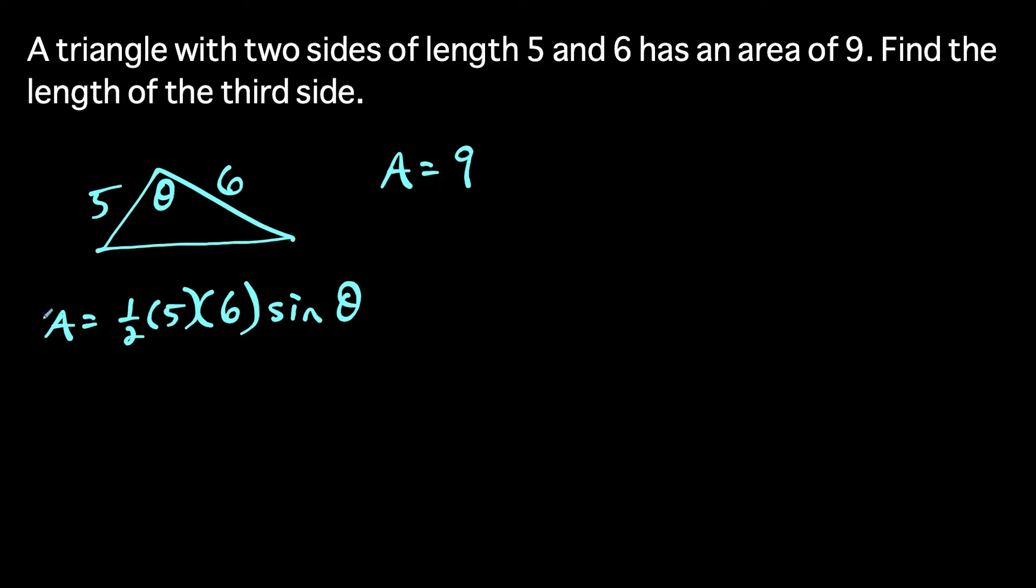And what we could do here is we could replace the area with nine. And this is going to give us nine equals, and this is 30 times a half, which is 15. So we have nine equals 15 times sine of angle theta. And then to solve for sine of theta, we're just going to divide both sides by 15. And that's going to give us sine theta equals nine over 15.